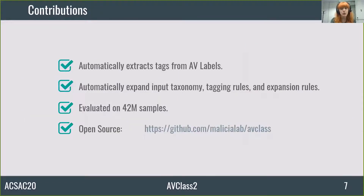AV Class 2 automatically extracts tags from AV labels that categorize malware samples according to their malware class, family, behaviors, and file properties. It uses and builds an open taxonomy that does not use a closed set of tags, and thus can handle new tags introduced over time by AV vendors. It was evaluated on 42 million samples from 11 datasets, and it is open source.